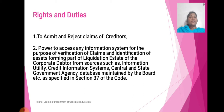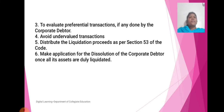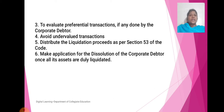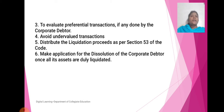So those are the two rights he has. Next, he has to evaluate the preferential transactions, if any, done by the corporate debtor. He also has to avoid undervalued transactions — if any undervalued transactions are there, he has to avoid such transactions. He has to distribute the liquidation proceeds as per Section 53 of the code. Next, he has to make an application for the dissolution of the corporate debtor once all its assets are duly liquidated.